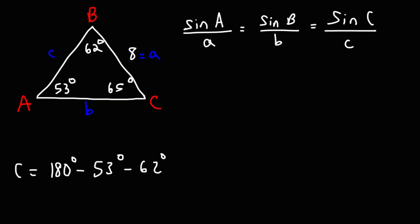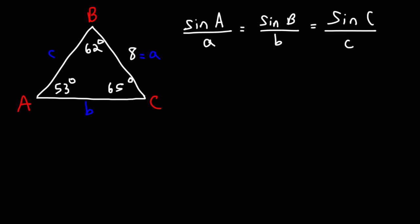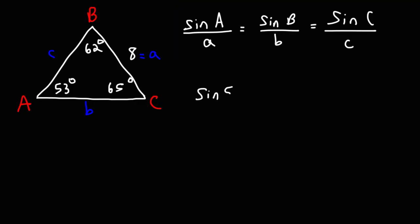Now that we have angle C, we can calculate side B or side C. Let's start with side B. I'm going to use the first two parts of the Law of Sines formula, because I know angle A, I know side A, I know angle B, but I don't know side B. So angle A is 53, side A is 8, angle B is 62, and we need to calculate the value of lowercase B.